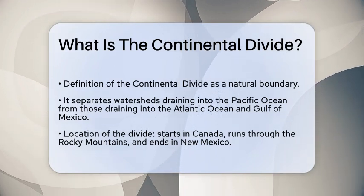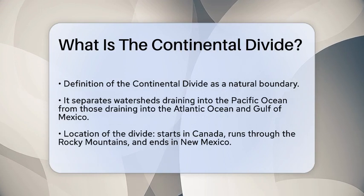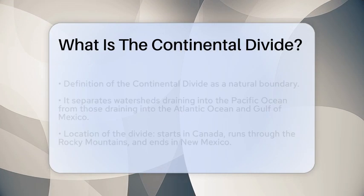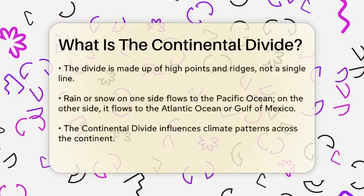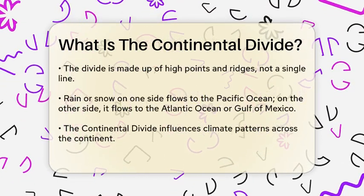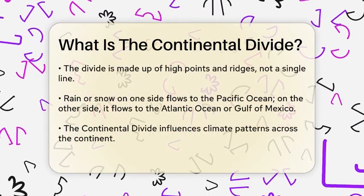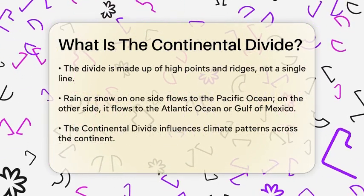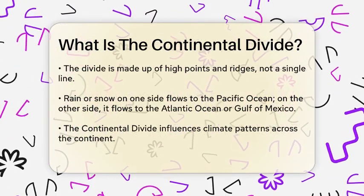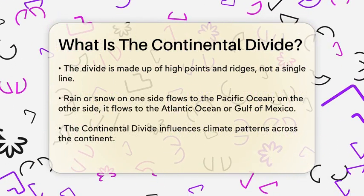The Continental Divide is a natural boundary that separates the watersheds that drain into the Pacific Ocean from those that drain into the Atlantic Ocean and the Gulf of Mexico. It runs from the northernmost point of North America in Canada, through the Rocky Mountains, and down to New Mexico.